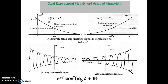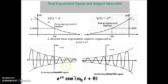Let us see some graphical representations of real exponential and damped sinusoidal signals. Figure A shows x(t) equal to e^(−αt), representing a decaying exponential function. Figure B shows x(t) equal to e^(αt), representing a rising exponential signal. The third figure is for a decaying sinusoidal signal, and the last figure is for a growing sinusoidal signal.